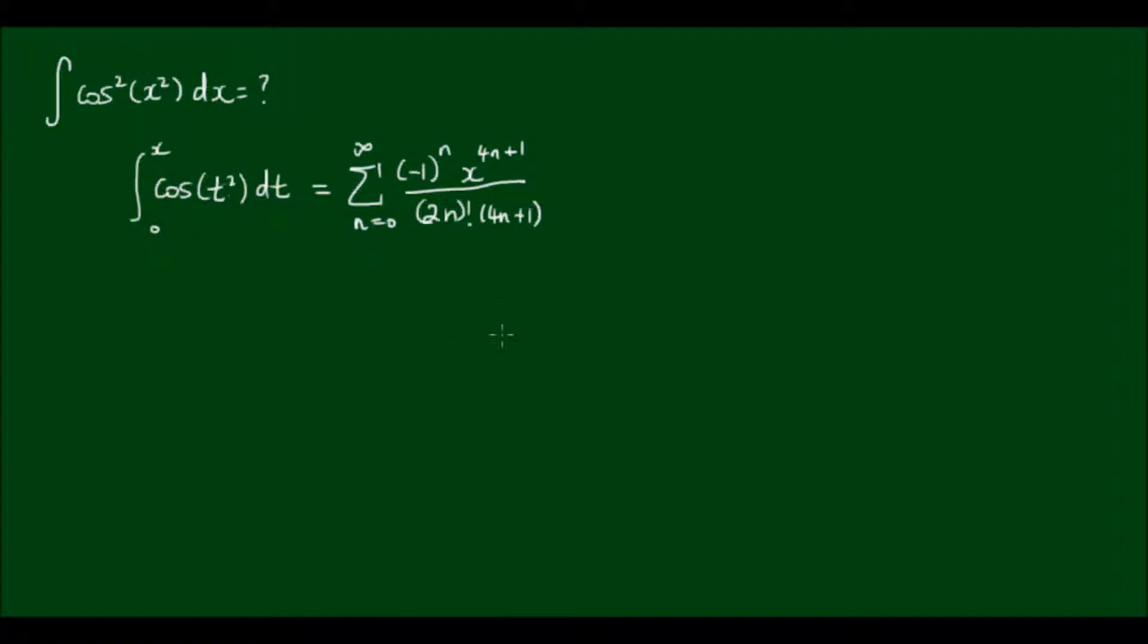And we can now use this expression to find the integral of cos² of x². Now trigonometric identities are very powerful and can help us simplify this cos² term here. So we know that the cos² of θ can be rewritten as 1/2 outside of (1 + cos 2θ).